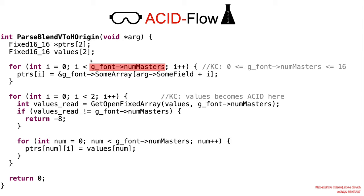Taking a closer look, we recognize that the pointers array is a fixed-sized stack array of size two. However, numMasters can take any values from zero to 16. So we have an opportunity for an out-of-bound access.